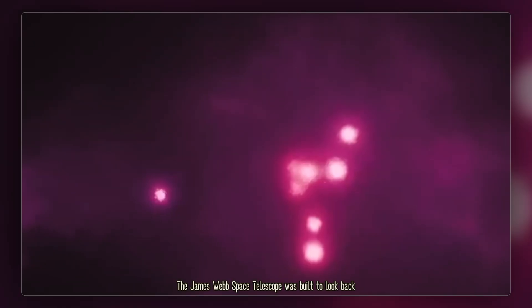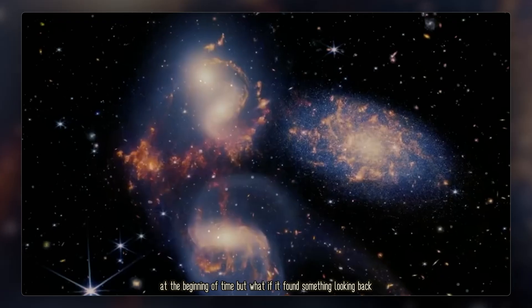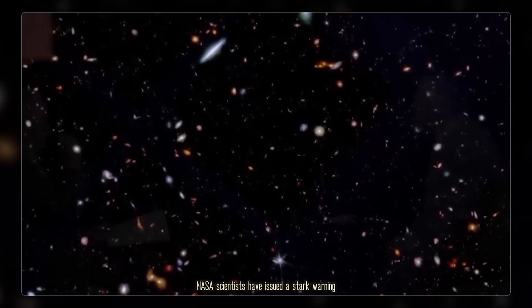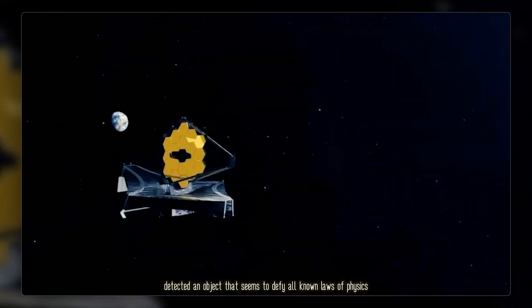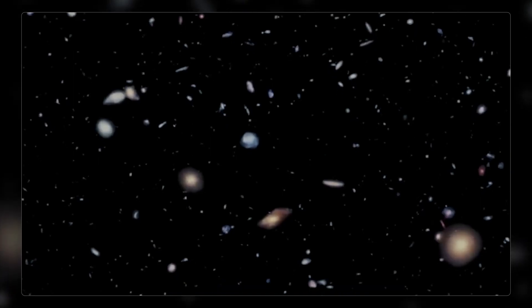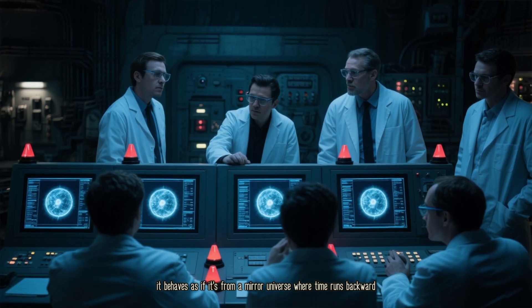The James Webb Space Telescope was built to look back at the beginning of time. But what if it found something looking back? NASA scientists have issued a stark warning after the telescope detected an object that seems to defy all known laws of physics. It behaves as if it's from a mirror universe, where time runs backward.